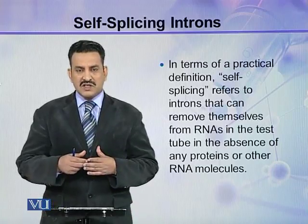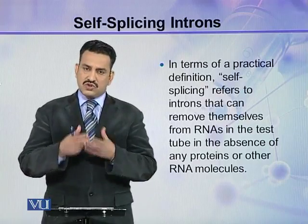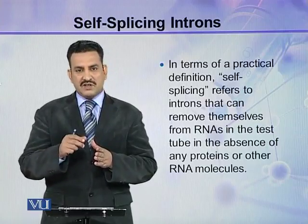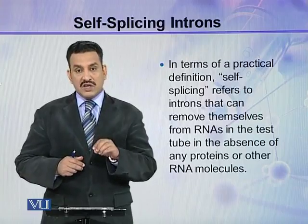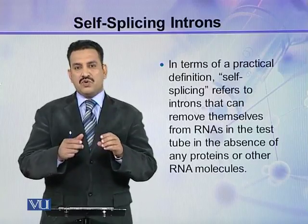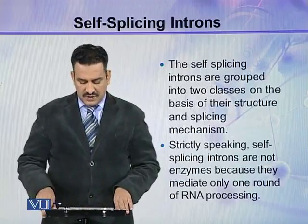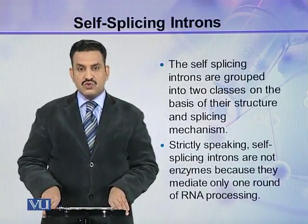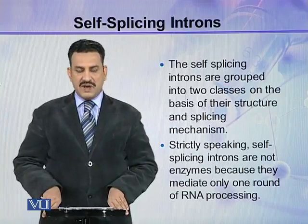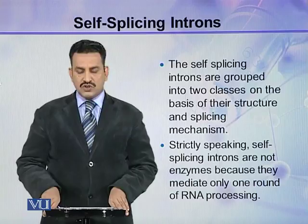Self-splicing introns are grouped into two classes on the basis of their structure and splicing mechanism. These two classes are group 2 introns and group 1 introns.